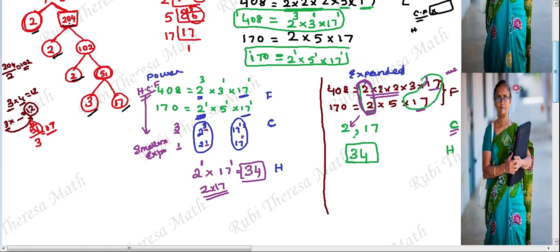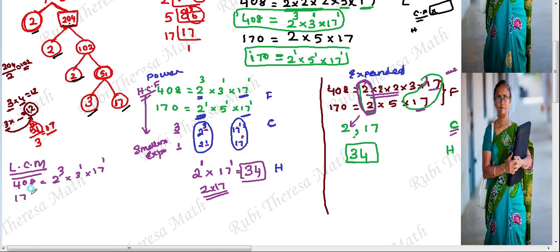Now for LCM. 408 equals 2 power 3 into 3 power 1 into 17 power 1. 170 equals 2 power 1 into 5 power 1 into 17 power 1. For LCM, what do you choose? The greatest exponent.